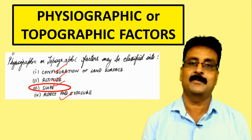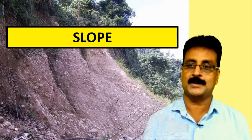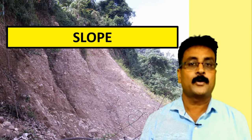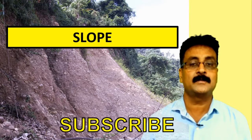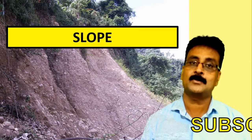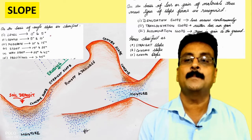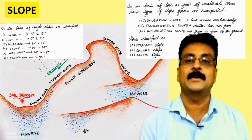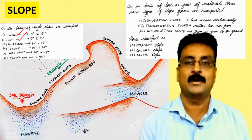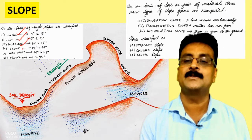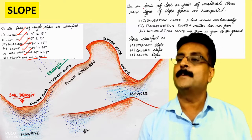For a forester, slope is very important because it determines erosiveness, depth of the soil, and the moisture regime. On the basis of angle, slope is classified into: level slope (0–5 degrees), gentle slope (5–10 degrees), moderate slope (10–15 degrees), steep slope, very steep slope, and precipitous up to 45 degrees.